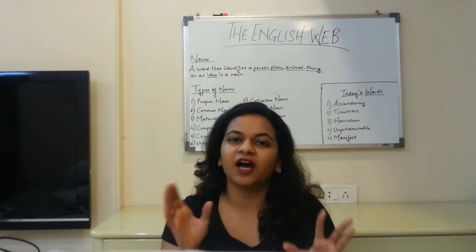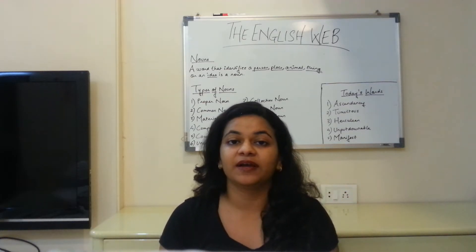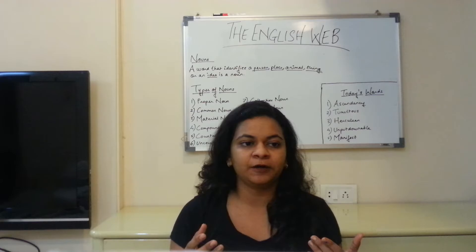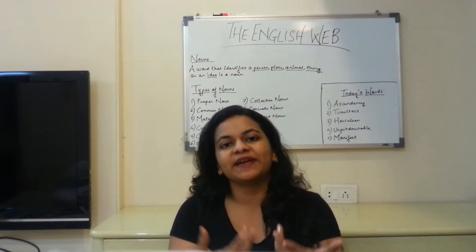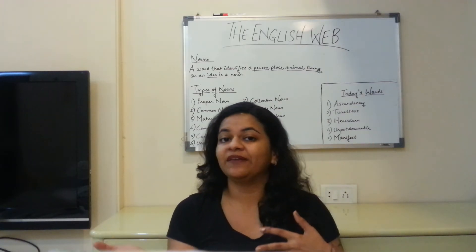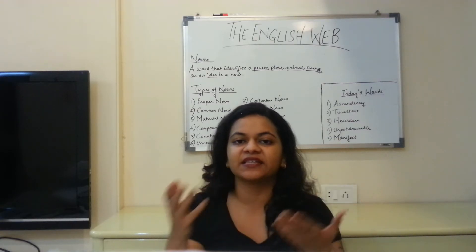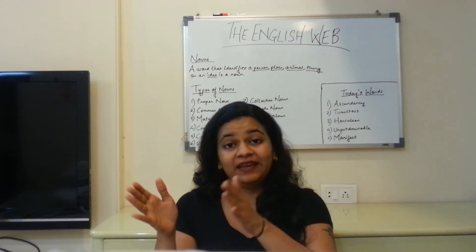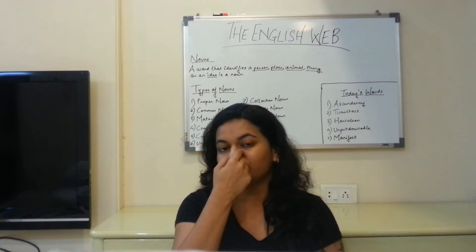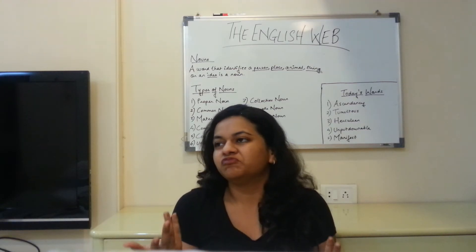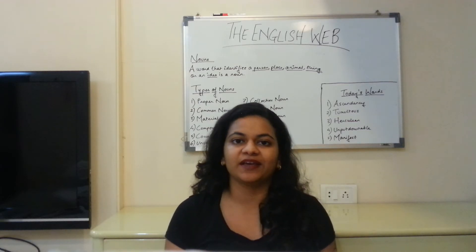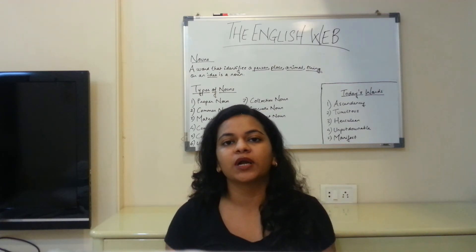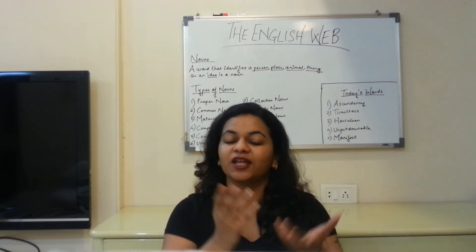The fourth and last noun in today's video is a compound noun. A compound noun is basically two words that you connect to form a single noun. Those two words could be hyphenated words like 'anti-social' or 'daughter-in-law,' or they could be two words joined together like 'toothpaste' or 'softball,' or two different words that are closely related by meaning like 'post office' or 'lower class.' So it's basically a combination of two words joined together to form a noun.